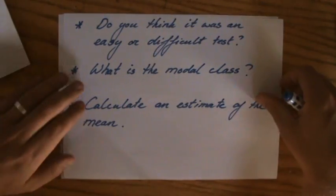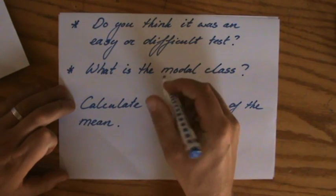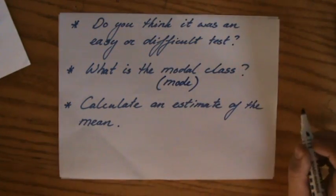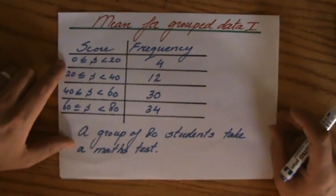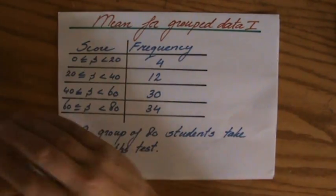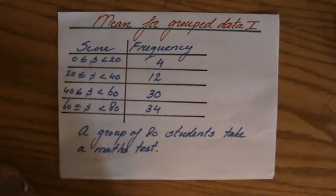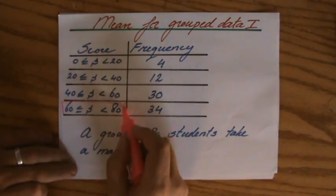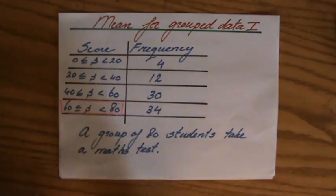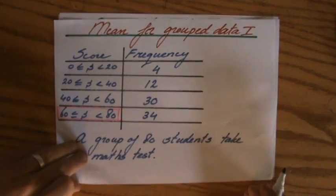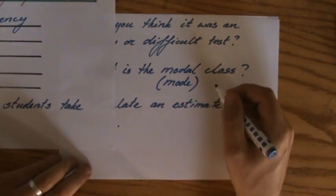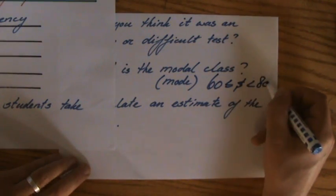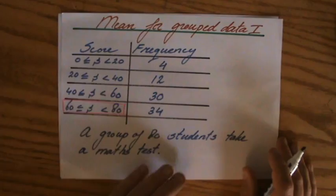What is the modal class? And do not panic now. With modal class, they kind of mean the mode. But when we're talking about classes, they say the modal class. So which class is most popular? In which class, in which group, are the most pieces of information? And indeed, that is this group. So the modal class is between 60 and 80. Do not write down 34. The modal class is going to be bigger or equal than 60 and smaller than 80.